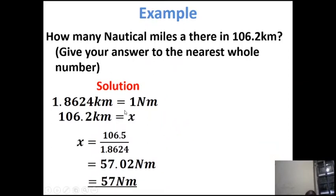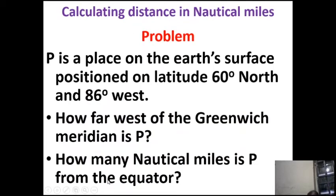An example will make it clearer. How many nautical miles are there in 106.2 kilometers? Give your answer to the nearest whole number. Solution: we know that 1.8624 kilometers equals one nautical mile. So 106.2 kilometers divided by 1.8624 gives X equal to 57.02 nautical miles, which to the nearest whole number is 57 nautical miles.